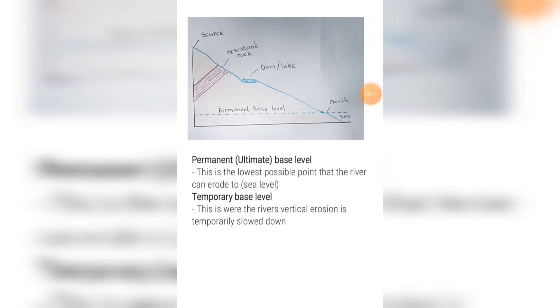The permanent or ultimate base level of a river is the lowest possible point that the river can erode to. In other words, sea level.